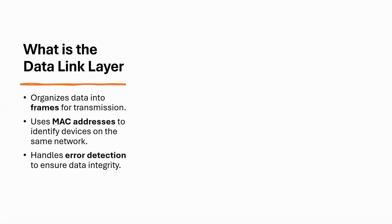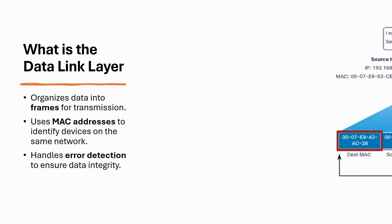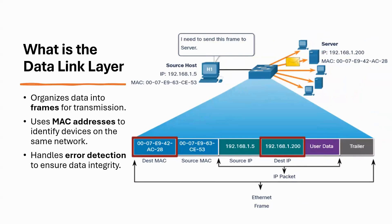Layer 2 of the OSI model is all about framing data and ensuring it gets from one device to another on the same network. It handles error detection, organizes data into frames, and uses MAC addresses to make sure data is delivered to the correct device. The key points here are that data is organized into frames for transmission, it uses MAC addresses to identify devices on the same network, and it handles error detection.